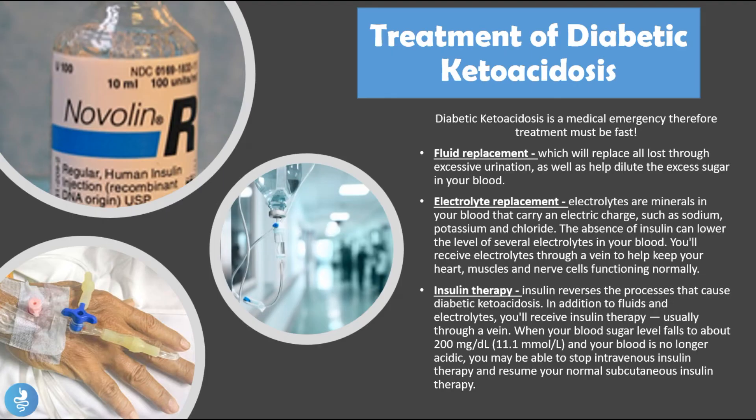Diabetic ketoacidosis is a medical emergency, so treatment must be fast. The first intervention is fluid replacement. Because these patients are usually vomiting and producing high levels of urine, they have very low fluid levels in the blood. Fluid replacement replaces all losses from excessive urination and also helps dilute the excess sugar in the blood.